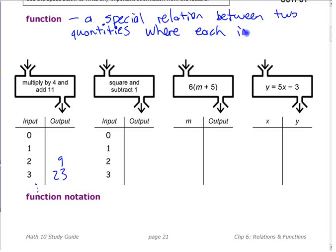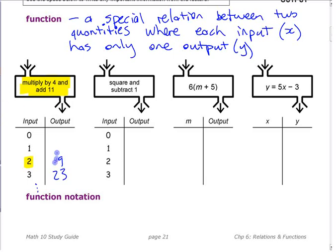The only condition or rule is where each input, I'll put in brackets here X, has only one output, or in other words Y. When you put into this rule, if you put in a 2, you multiply it by 4 and you add 11, you get 19. You don't get 19 or something else.